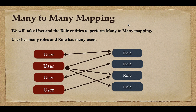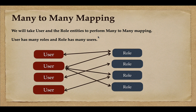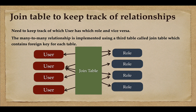Welcome back. In this lecture, let's take a look at many-to-many mapping in our e-commerce project. We'll use User and Role entities to perform many-to-many mapping. A user has many roles — for example, admin role, customer role, user role, sales representative role, and manager role. So a user has many roles and many roles can be assigned to a user.